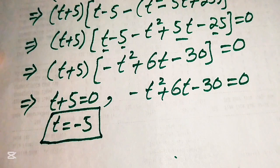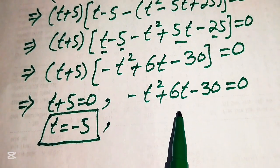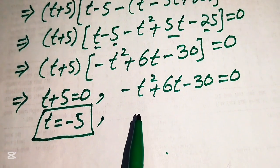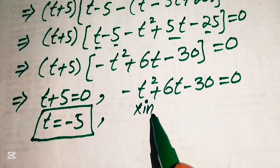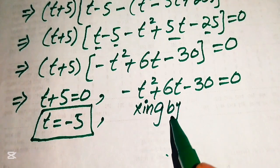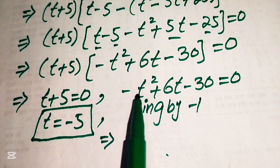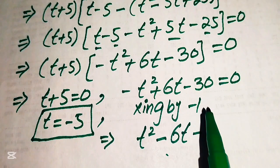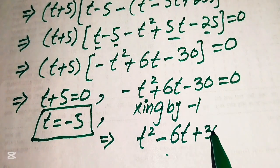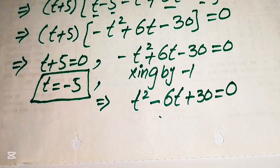From the first case, t equals minus 5, which is the first real root. To find the other roots we solve the quadratic. Multiplying both sides by minus 1 converts it to standard form: t squared minus 6t plus 30 equals 0.